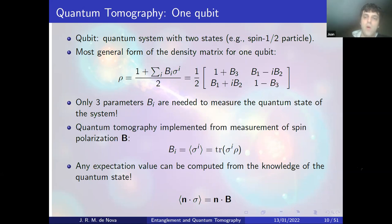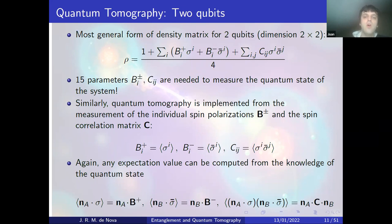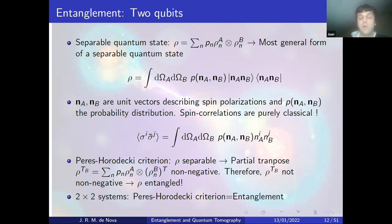For two qubits, the most general density matrix lives in a Hilbert space of dimension 2×2 and is expressed in terms of the Pauli matrices of both particles. We now need 15 parameters to determine the quantum state, obtained from measurements of spin polarizations and spin correlations. The vector B comes from individual spin polarizations of each particle, and the spin correlation matrix C is obtained from spin-spin correlations.